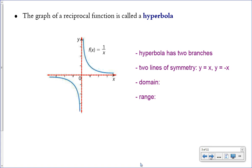The graph of a reciprocal function is called a hyperbola. Hyperbolas have two branches — the blue curve is the actual function. The red dotted lines are called asymptotes, which we'll cover more later. A hyperbola has two lines of symmetry: y = x and y = -x. If you folded the graph over on either of those purple lines, the branches would match up with each other.